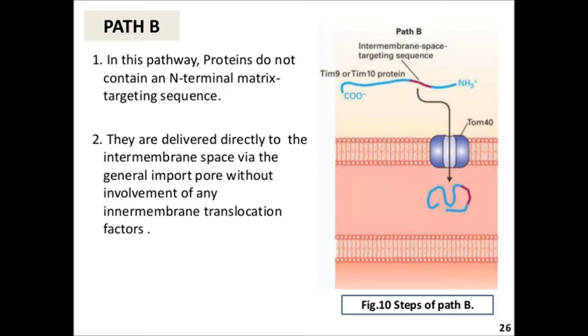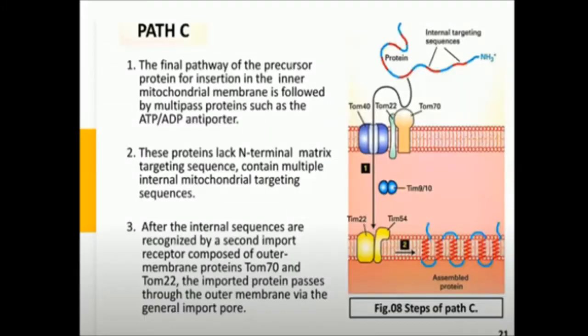Three mitochondrial outer membrane receptors are known as TOM20, TOM22, and TOM70. TOM70 normally binds to internal targeting peptides and acts as a docking point for cytosolic chaperones. TOM20 binds to the pre-sequences, and TOM22 binds both pre-sequences and internal targeting peptides.